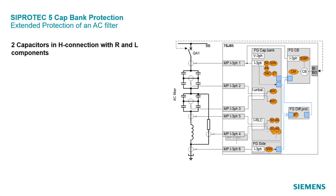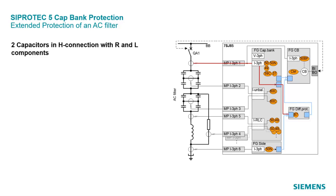Different from the previous topology, we now have 24 current inputs for the additional measuring of a second IRLC and another IC at the star point for current differential protection. The interfaces of the capacitor bank function group remain the same. However, the IRLC is also used as a multiple measuring point interface to distribute the current measurements from two different locations to two different sets of protection functions — in our case the overcurrent and overload protection. The function group capacitor side measures the current at the star point. Finally, the function group capacitor bank differential protection is used for the overall differential protection using the currents from measuring point I3 phase 1 and measuring point I3 phase 6.